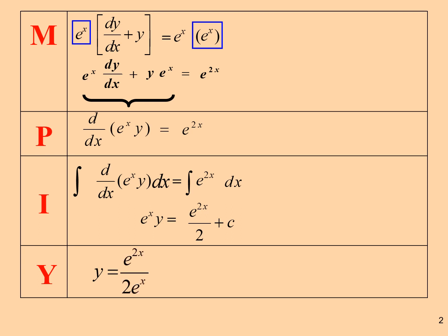Find y, which is y equal e to the power of 2x over 2 times e to the power of negative x plus c over e to the power of x.